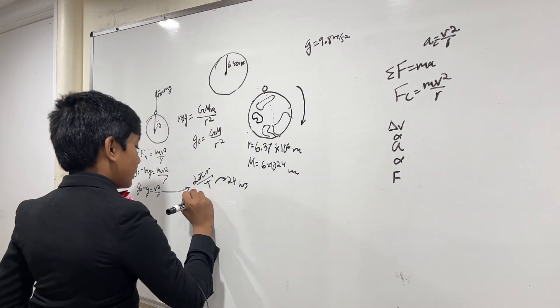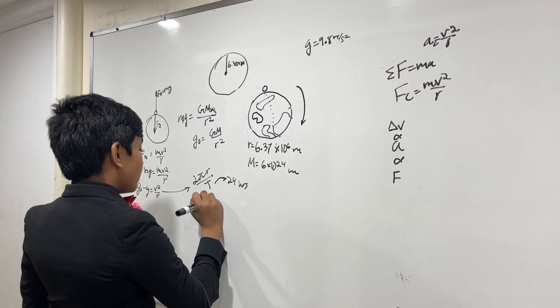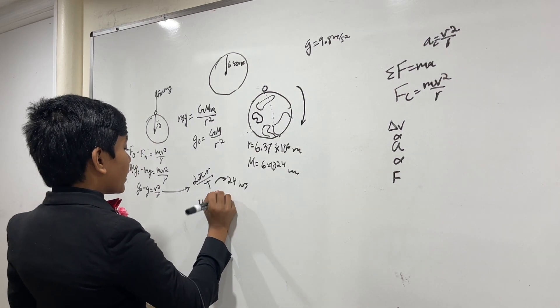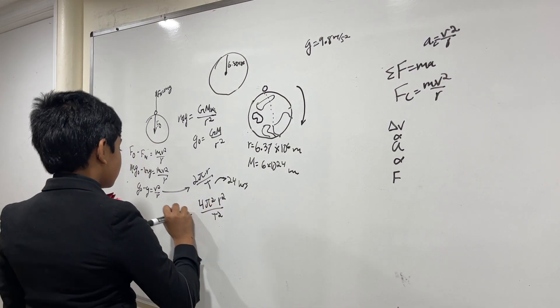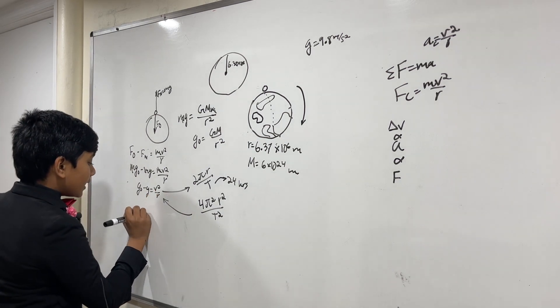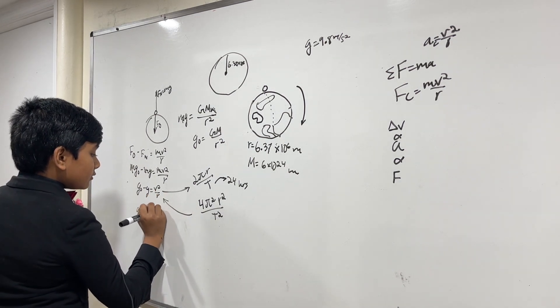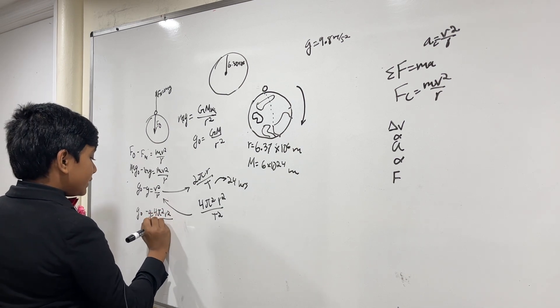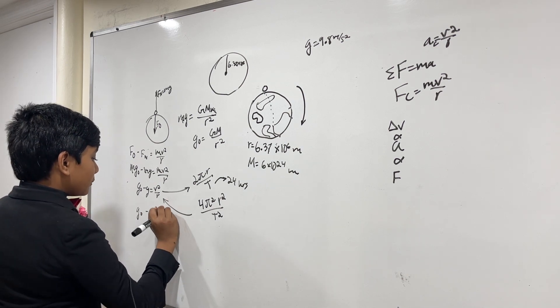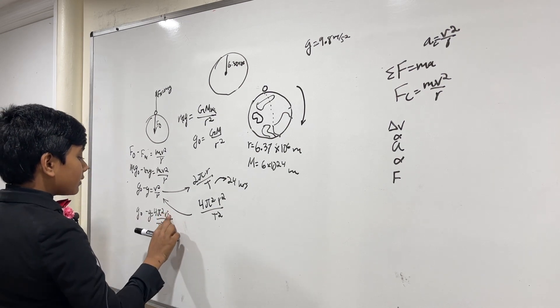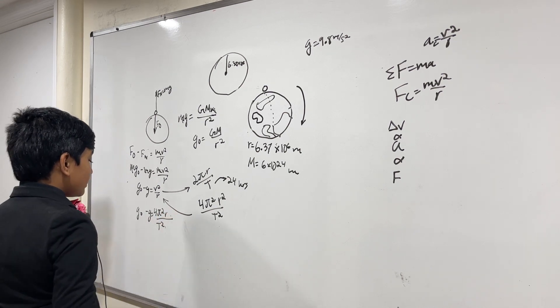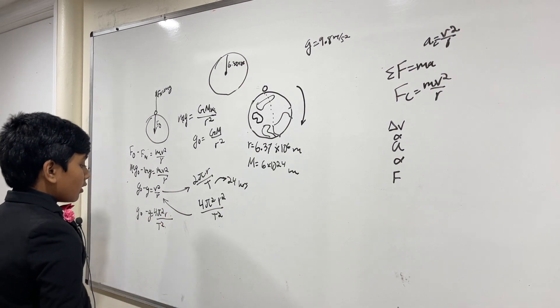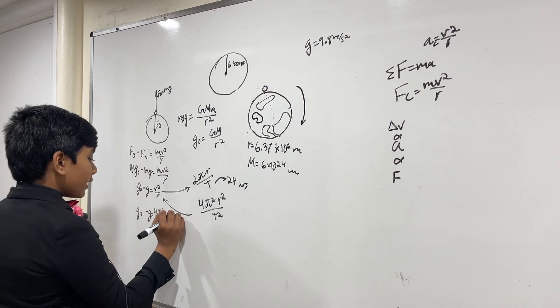So, now let's square that and see what it gets us. 4 pi squared R squared over T squared. Plug it back in. We get G naught minus G. It's 4 pi squared R squared over T squared R. Cancel. And we simply get the difference between G naught and G is 4 pi squared R over T squared.